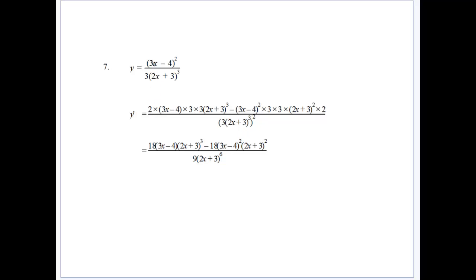And then we derive our first function. So derive our numerator, gives us the 2, subtract 1 from the power, times the derivative of 3x minus 4, times the second function. So the 3 outside of 2x plus 3 all cubed, minus our numerator, times the derivative here.